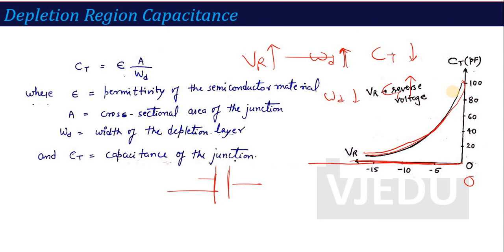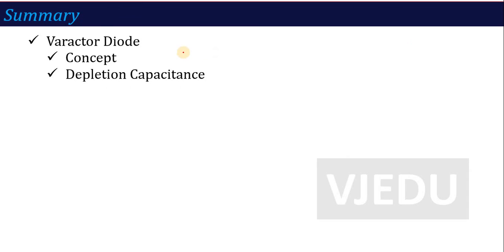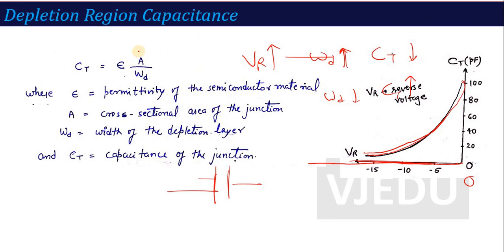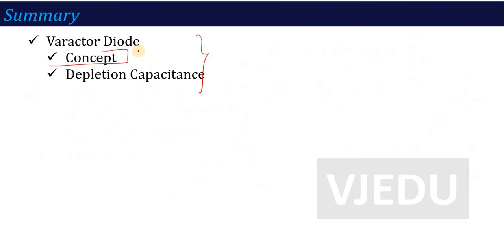A question came in last semester's paper: write a short note on varactor diode. So just define the concept of varactor diode — that it works like a variable capacitor, and explain how the capacitance varies using the expression CT = εA / WD. That's all for the varactor diode. In the next lecture, we will discuss the last topic, which is LCD — we will talk about liquid crystal displays. Thank you.